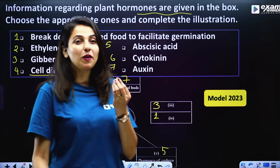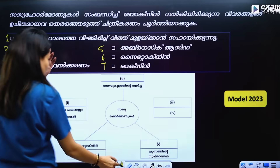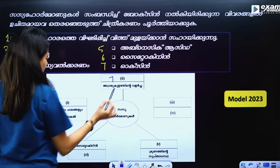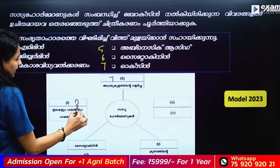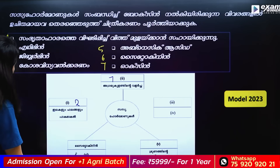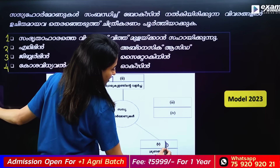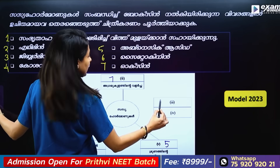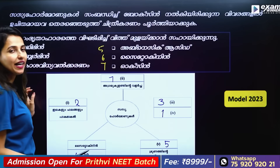That is sprouting of new leaves. So we have: Auxin, Ethylene, Cytokinin, dormancy in the resting state is Abscisic acid, and Gibberellin number 3 whose function is breakdown of stored food.